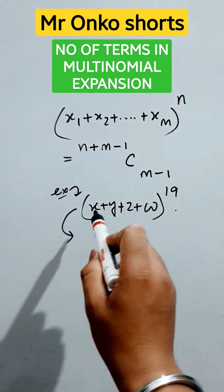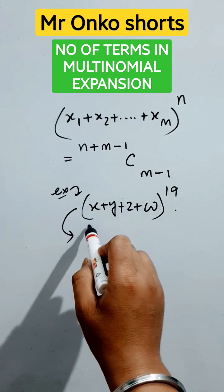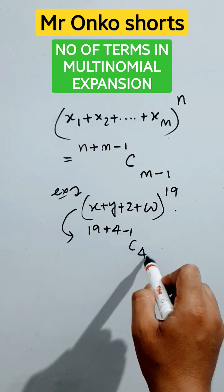So, there are 1, 2, 3, 4, 4 terms in this part. Now, 19 is the power. So, 19 plus 4 minus 1 c 4 minus 1.